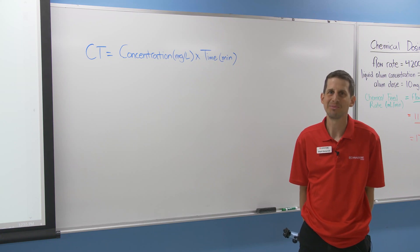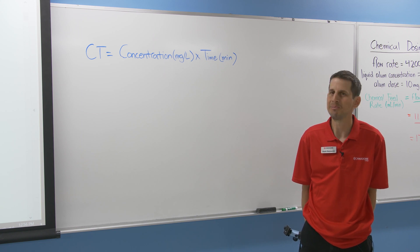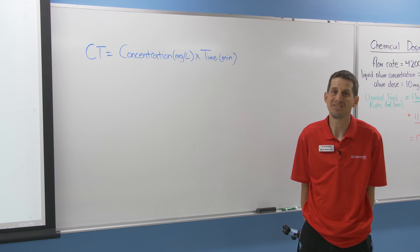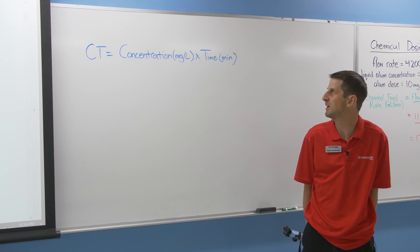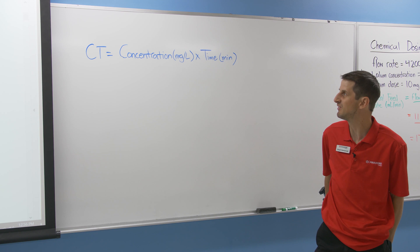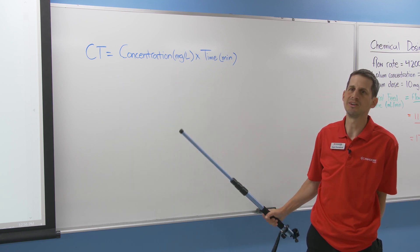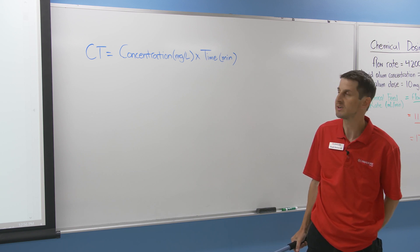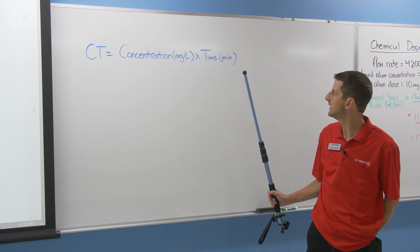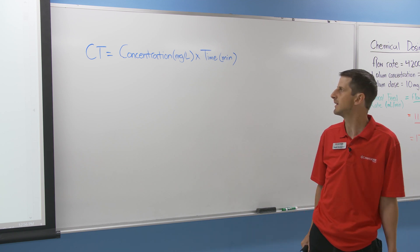We've got another challenging concept in water treatment called the CT concept, which baffles some operators. But really the CT is kind of neat because it's got its own definition. C stands for concentration, T stands for time. There's a value called the CT value, and you calculate it by multiplying the concentration of your disinfectant — chlorine disinfectant residual or other disinfectant — and multiply it by the amount of minutes you're going to have it in the clear well getting disinfected.